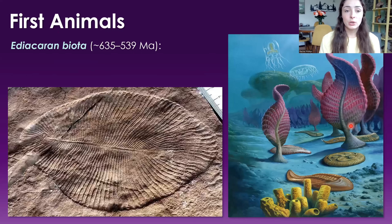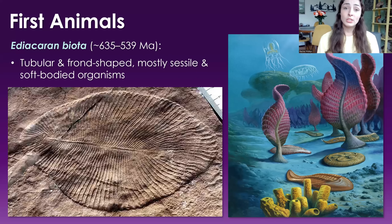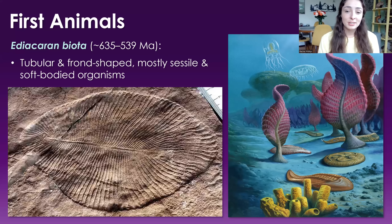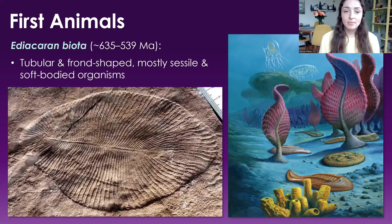Ediacaran biota, which evolved earlier around 635 million years ago up until the Cambrian explosion, were these tubular and frond-shaped, mostly sessile and soft-bodied organisms attached to the seafloor that lacked hard parts — no skeletons or shells — which is why they were so hard to find in the rock record for so long. Things that don't have hard parts don't get preserved as often because the organic material gets decomposed. That said, we do have some spectacular preservations as imprints that we've learned a lot from, though it's limited.